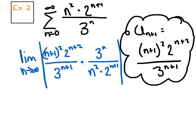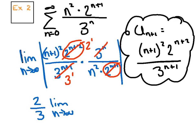If I subtract these exponential exponents—(n+2) minus (n+1)—I get 2 to the first power. Same thing here: I end up with 3 to the first power. I cannot cancel anything out of those n² terms. Clean up a little bit. I'm going to pull out my coefficient of 2/3. Then we've got the limit, and inside is (n+1)² all over n².